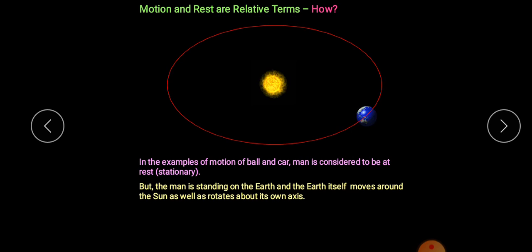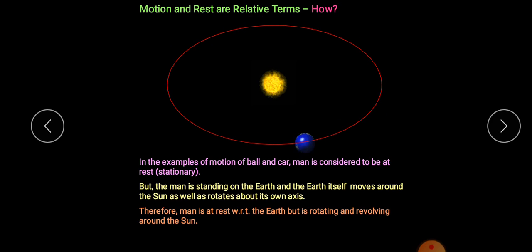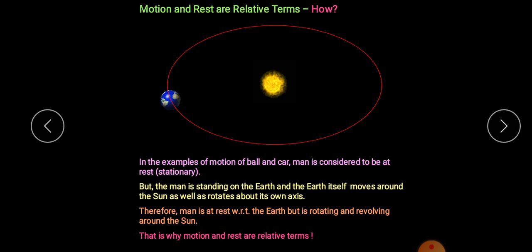But with respect to the earth, a person standing in one place was at rest, the ball was at rest, the car was at rest. After some time the ball moved, then the car moved — so their motion is with respect to the earth. Man is at rest with respect to earth but is rotating and revolving around the sun. With respect to space the person is in motion, but with respect to earth the person is at rest. That is why motion and rest are relative terms.